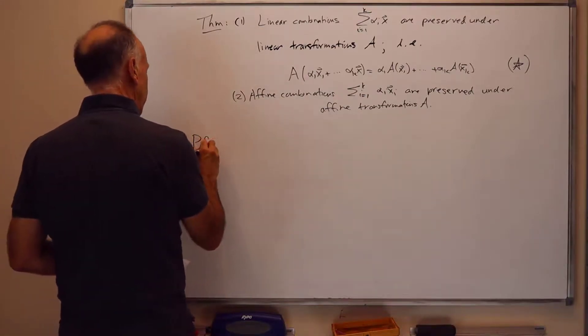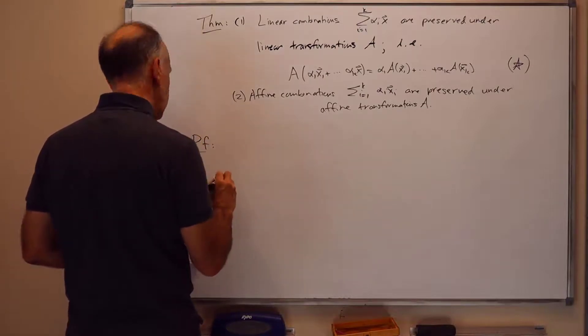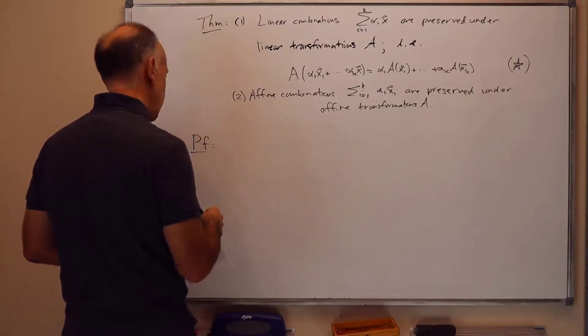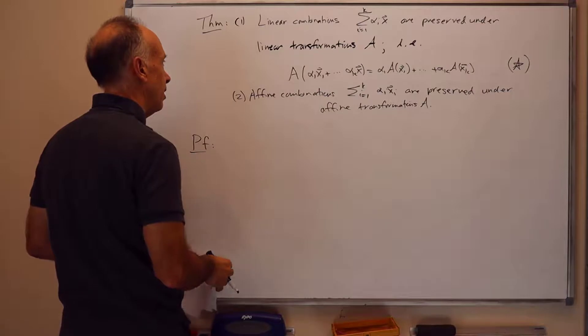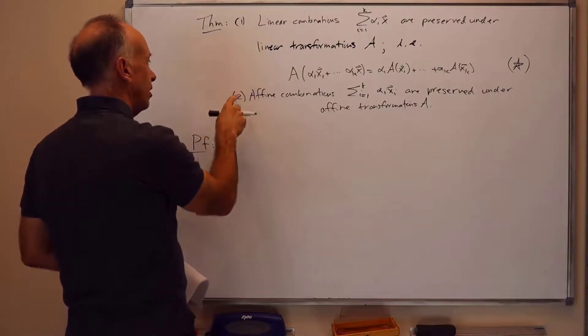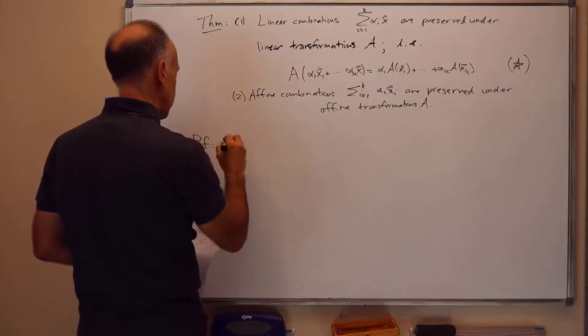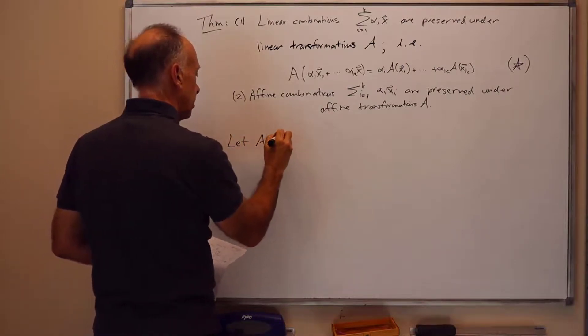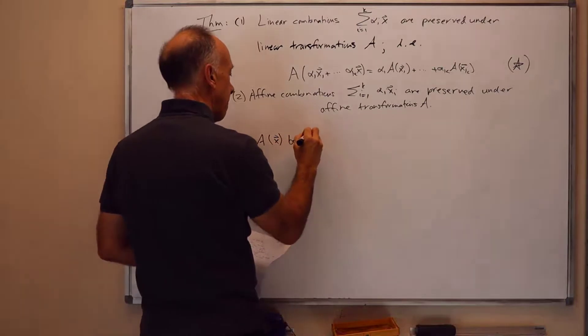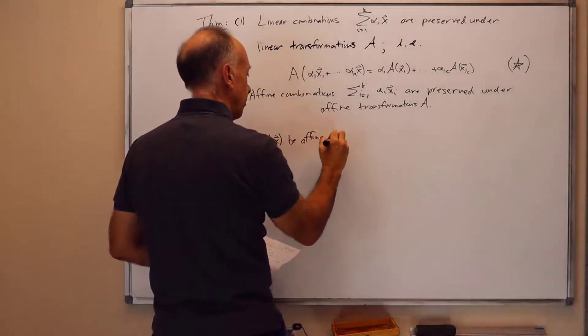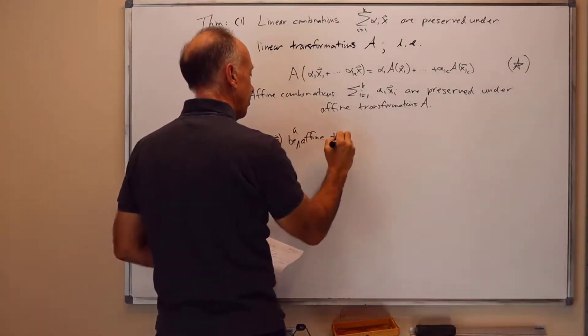So we'll see how this comes up here. But for a moment, let's just give a proof here. As I said already, 1 is easy, so let's prove 2. Let's take an affine transformation. So let A of x be an affine transformation. So A of x equals B of x plus u, where B is linear and u is a vector.